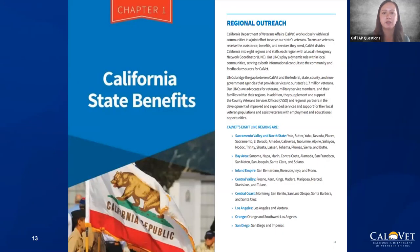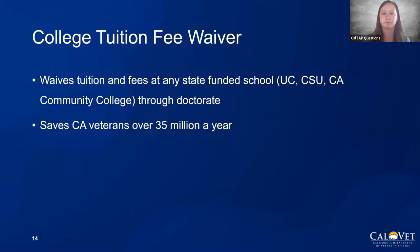What are my California benefits? In the Veterans Resource Book, chapter one is where it starts off. Another great thing about this first chapter is it lists all the different LINK regions we have within the state of California. The college tuition fee waiver is near and dear to my heart — basically it waives tuition and fees at any state-funded school, whether that's a UC, CSU, or community college, all the way up through the dependent doctorate. It's a great benefit for your dependents to utilize while they're in school.